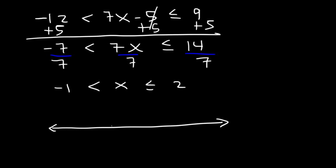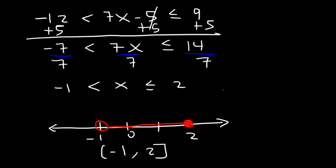So x is between negative 1 and 2. x is greater than negative 1 but not equal to it, so we have an open circle shaded towards the right. x is less than or equal to 2, so we have a closed circle shaded towards the left — it's between these two values. In interval notation, it's from negative 1 to 2, using a parenthesis for the open circle and a bracket for the closed circle.